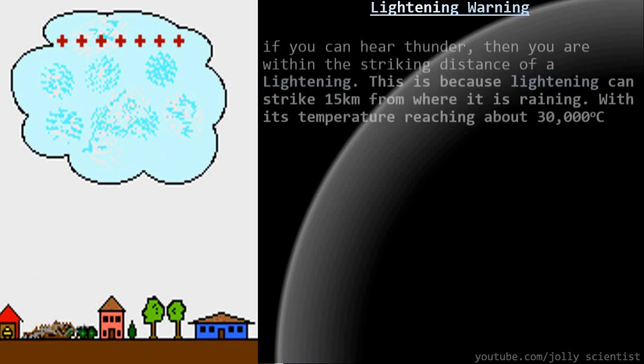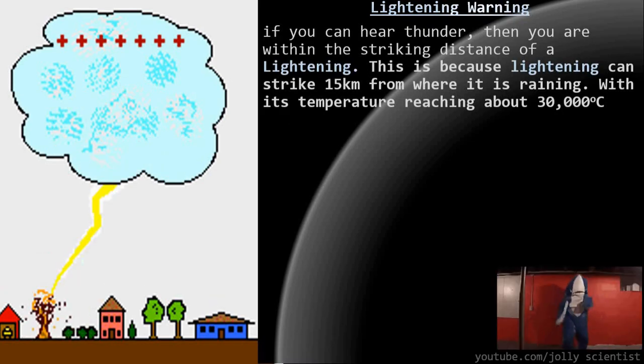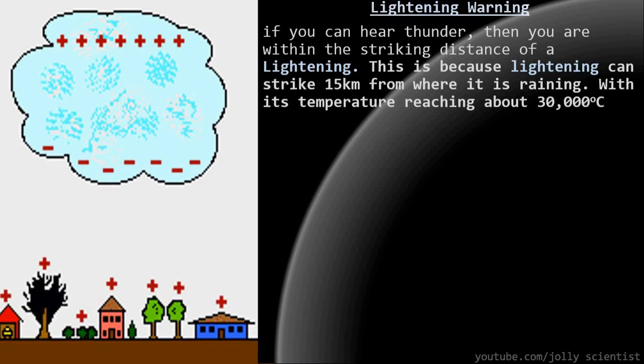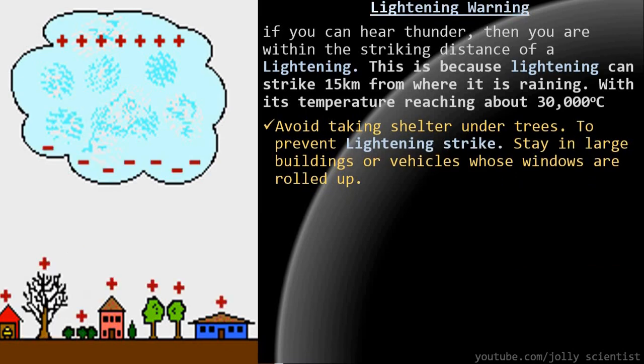Lightning warning. If you can hear thunder, then you're within striking distance of lightning. This is because lightning can strike 15 kilometers from where it is raining with its temperature reaching about 30,000 degrees Celsius. It's very important that you avoid taking shelter under trees to prevent lightning strikes. Stay in large buildings or vehicles whose windows are rolled up.